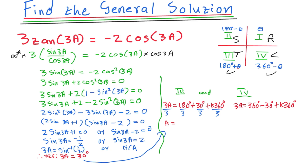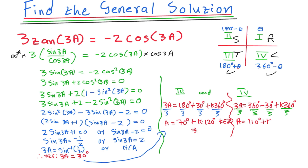For the fourth quadrant, dividing everything by 3: 360 - 30 = 330, and 330 ÷ 3 = 110°. And 360 ÷ 3 = 120°. So a = 110° + k·120°, where k is an element of integers. That is your complete general solution.